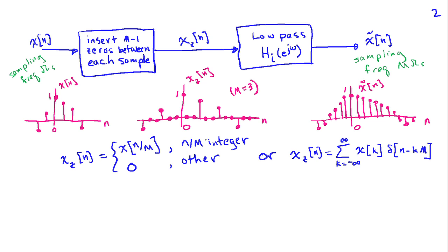To understand how this works in the frequency domain, we need an expression for x_z[n]. We can write x_z[n] = x[n/m] when n/m is an integer, and 0 otherwise. Another equivalent way using the impulse function is x_z[n] = Σ_{k=-∞}^{∞} x[k]·δ[n − km]. The delta function is non-zero only when n = km, which places the correct x[k] values at the right positions and zeros in between.